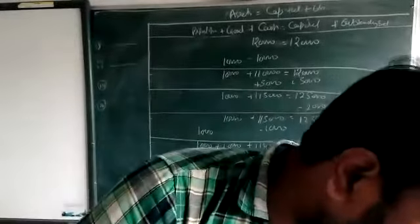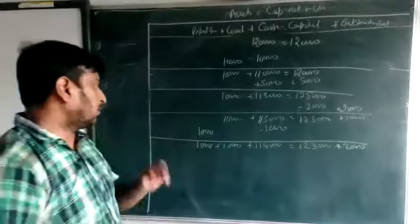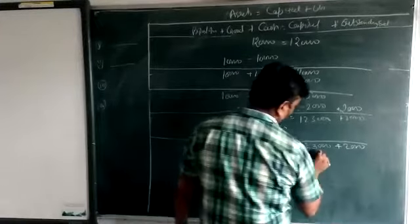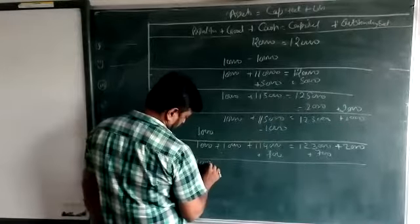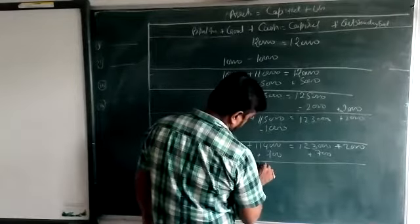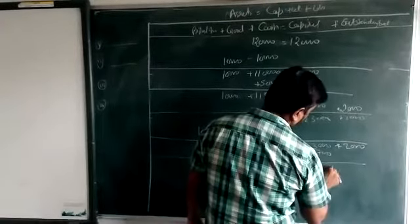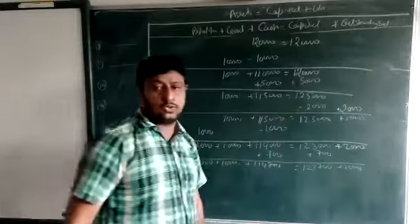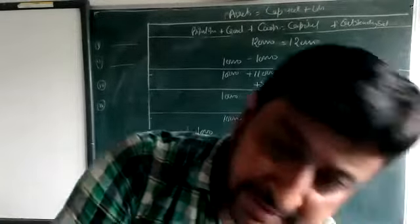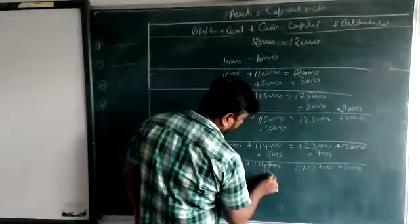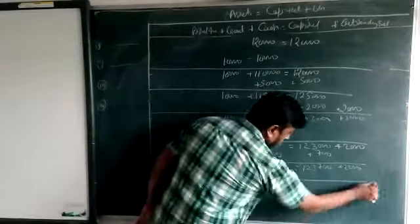Receive interest seven hundred: that will be added to cash and added to capital. Next, sold goods for cash — costing five thousand, selling for seven thousand. We add seven thousand in cash and reduce goods by five thousand. The difference of two thousand is profit, which we add to capital.